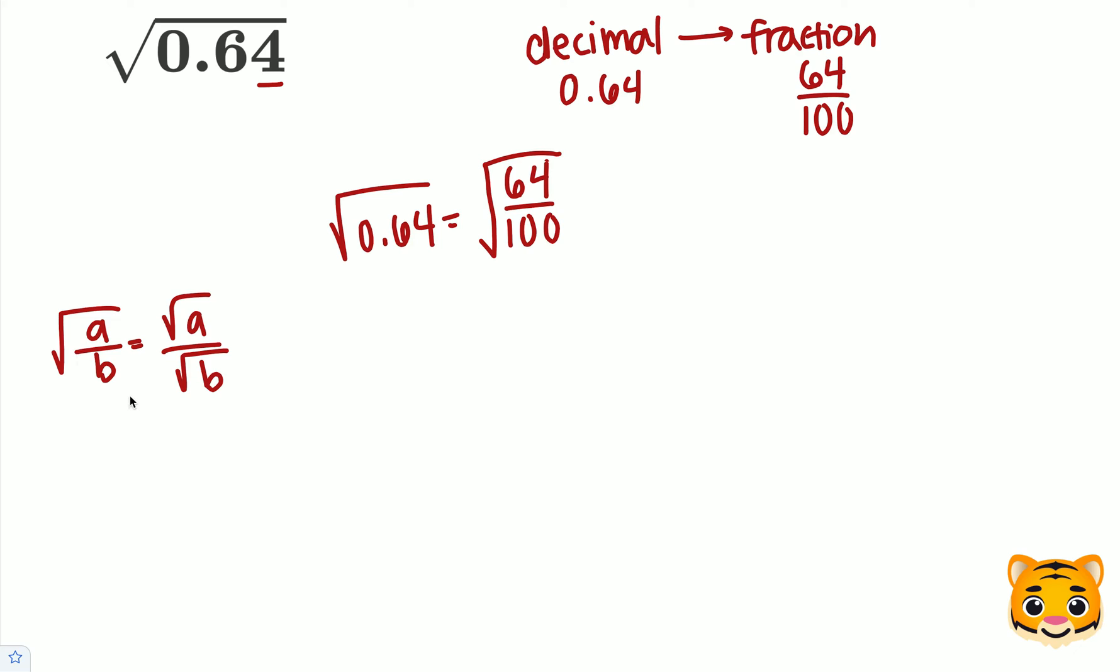Meaning that if we have a fraction inside of a square root, we can then rewrite it as our numerator and denominator, both being their own square roots.